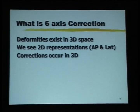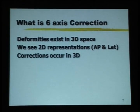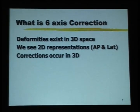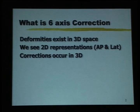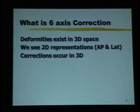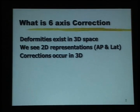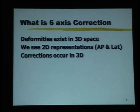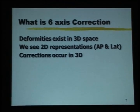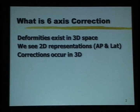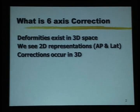We have just put a new label on this because all six axes are tackled at the same time. Deformities exist in 3D space and are corrected in three-dimensional space. For planning, we usually use two-dimensional representations of the AP and the lateral x-ray.